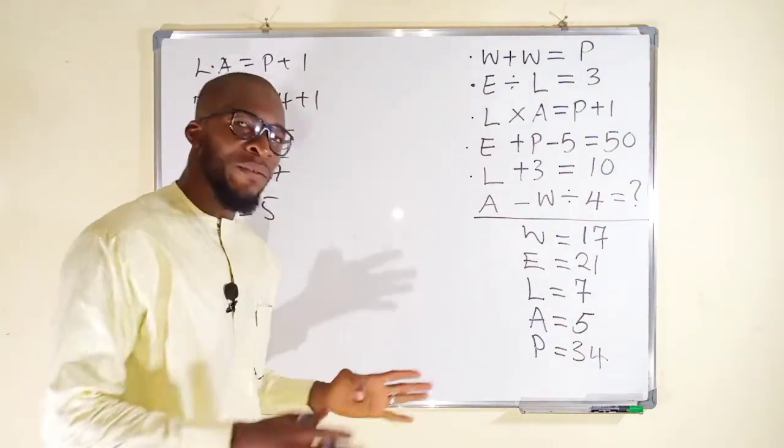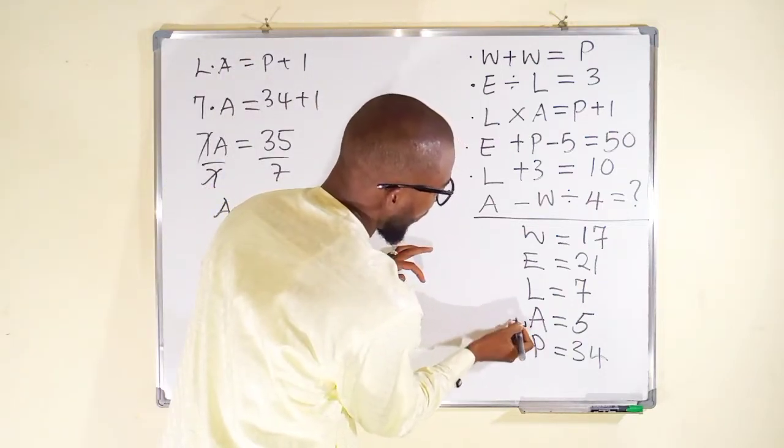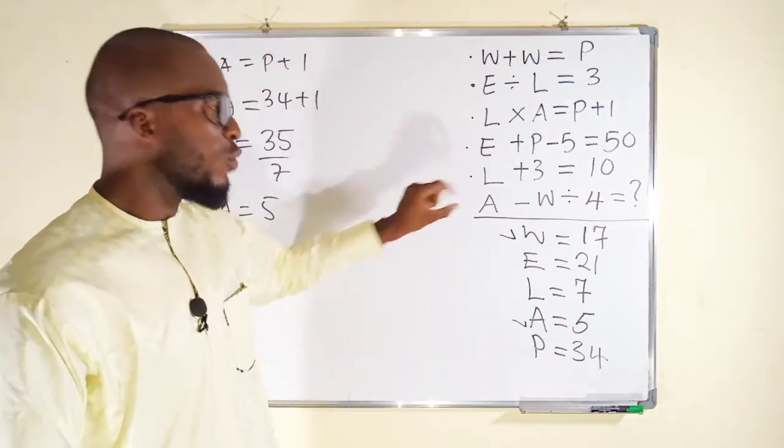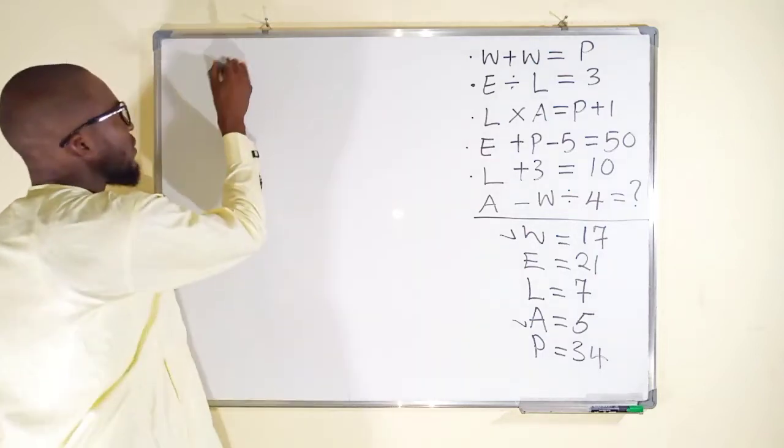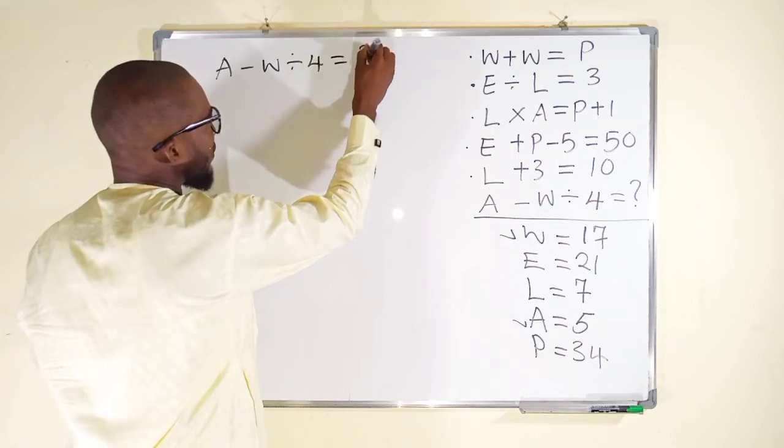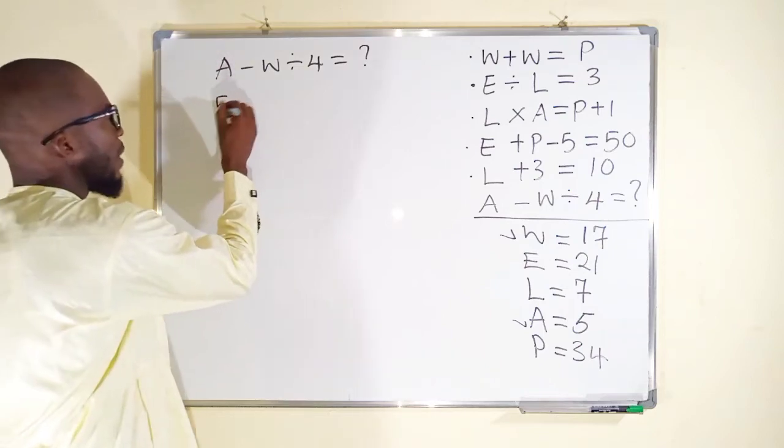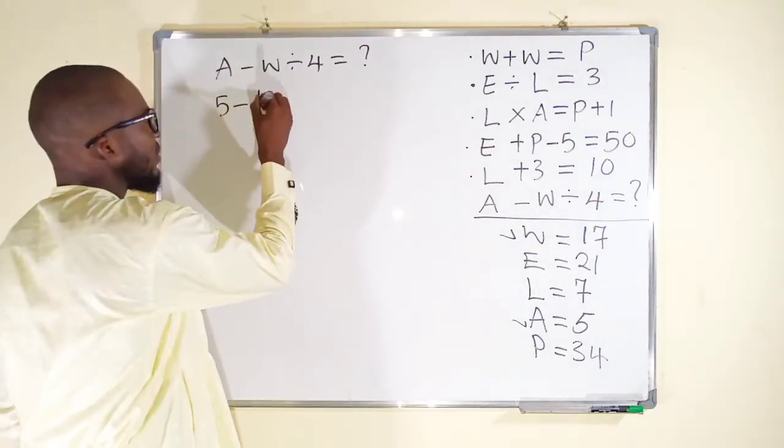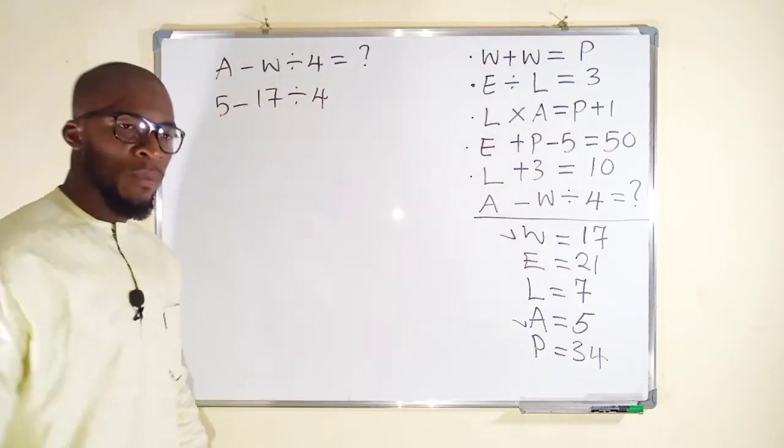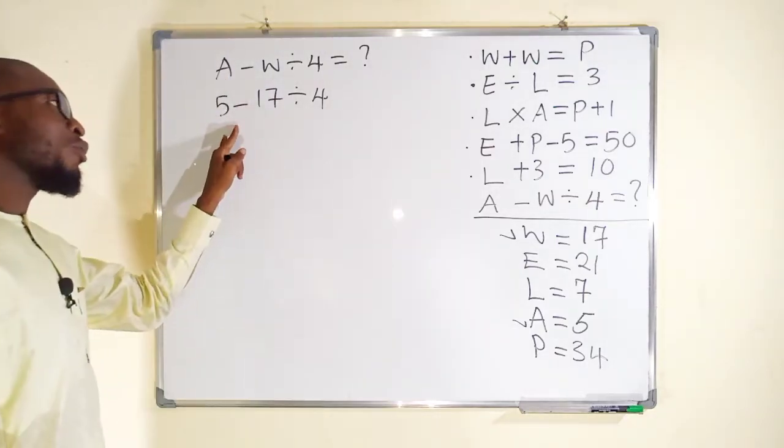All the unknown variables have been found. But we only need A and W to solve our main equation that we are looking for. You can see that the last equation is A minus W divided by 4 equals what? Let's simplify it. A is 5, so we have 5 minus W is 17 divided by 4. This is where the problem is. If you don't know the operation to begin with, you are in trouble.